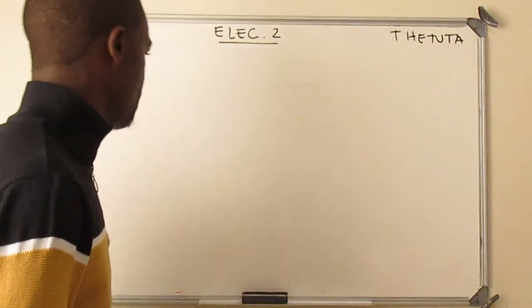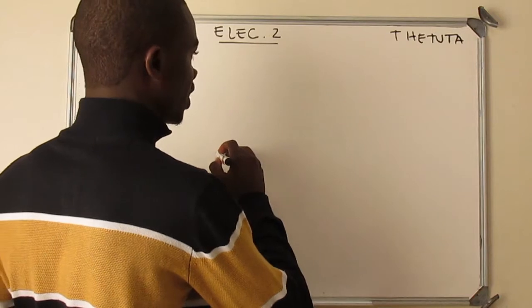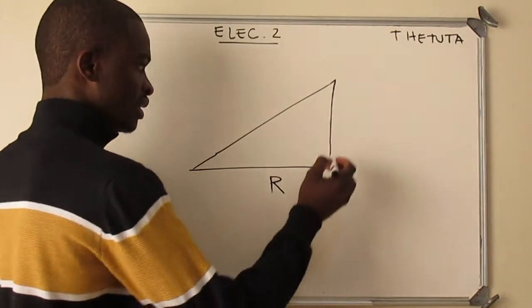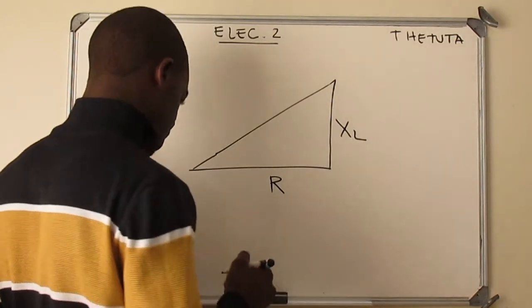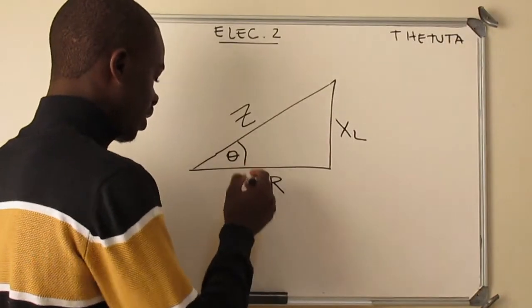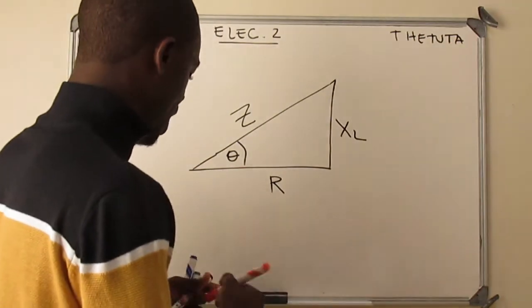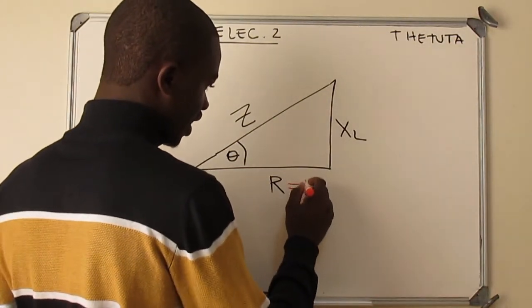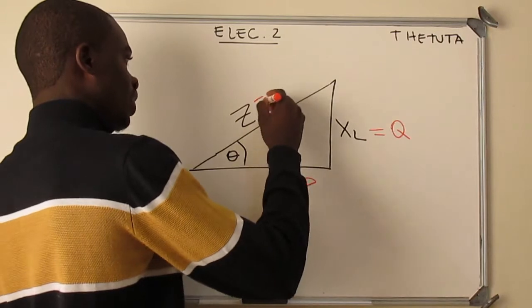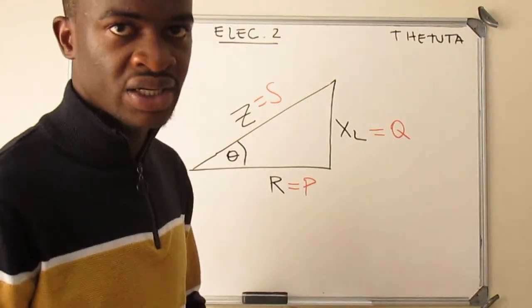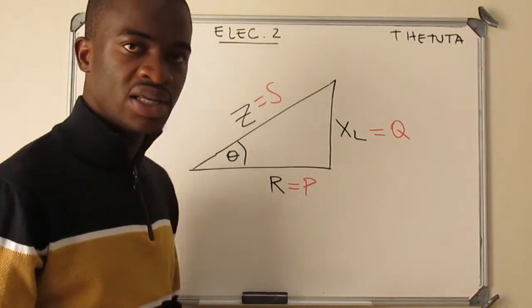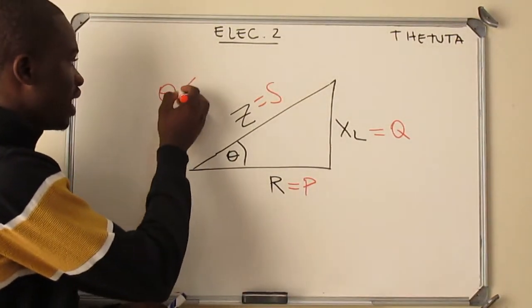We all know that we have our impedance triangle. A pure resistor is at an angle of zero, the inductance is at 90 degrees, and then you have your impedance. Here you have your power factor angle. With the resistor you have active power, with the inductance you have reactive power, and also your complex power. The impedance triangle and the complex power triangle are the same because the power factor angle is the same.